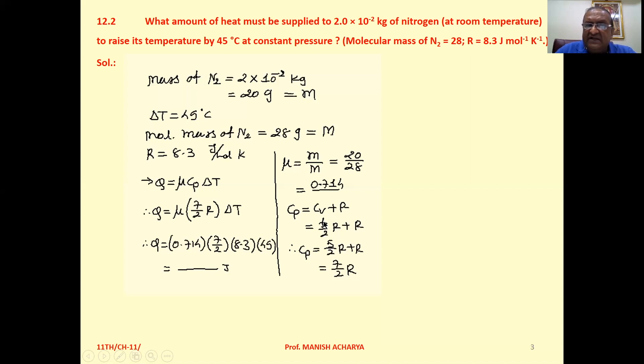Here you have to remember this thing: for nitrogen, the degrees of freedom f = 5. So (5/2)R + R, resultantly you are getting (7/2)R.